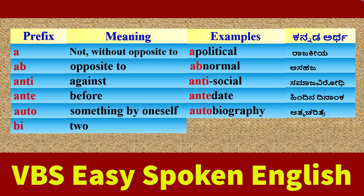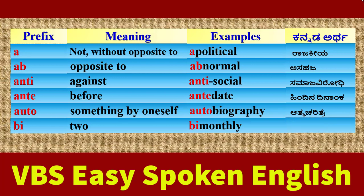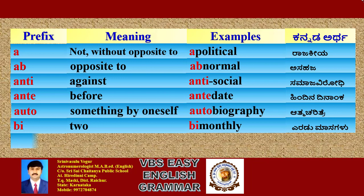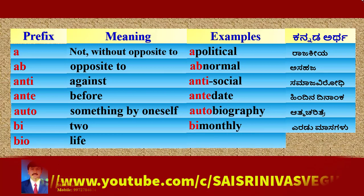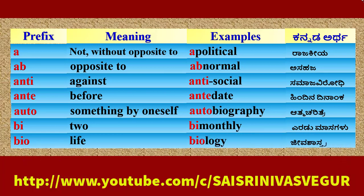Prefix 'Bi': its meaning is 'two'. Example: Bimonthly. Kannada meaning: Eradu Masakadu — every two months. Prefix 'Bio': its meaning is 'life'. Example: Biology. Kannada meaning: Jeeva Shastra.